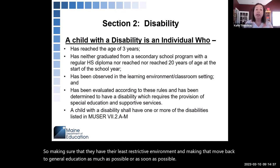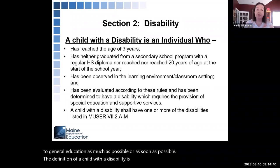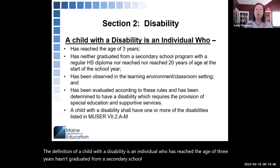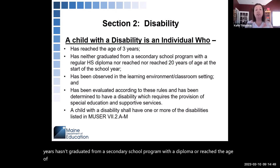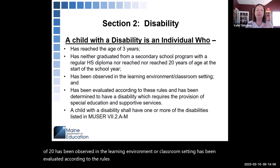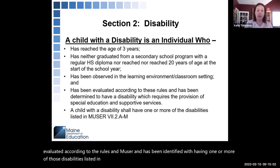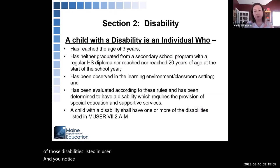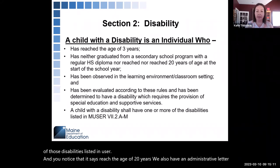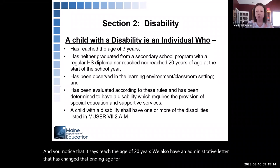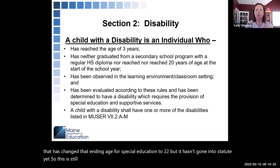The definition of a child with a disability is an individual who has reached the age of three years, hasn't graduated from a secondary school program with a diploma or reached the age of 20, has been observed in the learning environment, evaluated according to MUSER rules, and identified with one or more of the disabilities listed in MUSER. Note that an administrative letter has changed the ending age for special education to 22, but it hasn't gone into statute yet, so MUSER still reads age of 20.